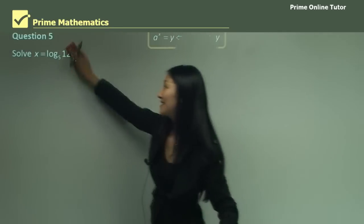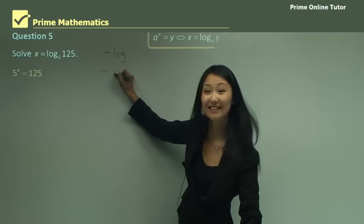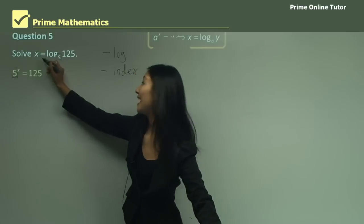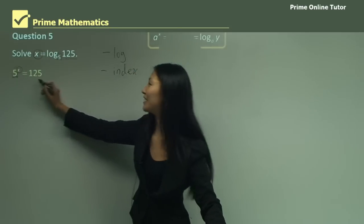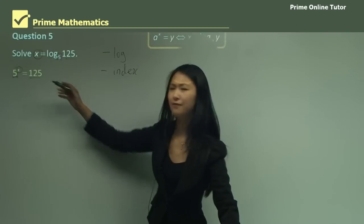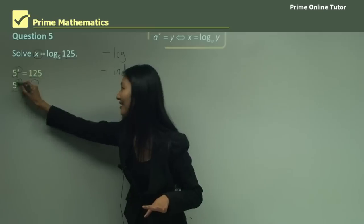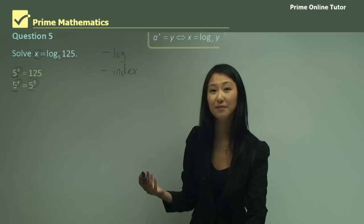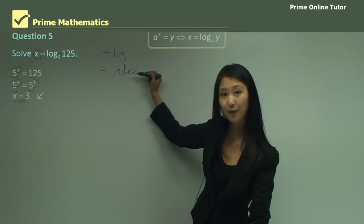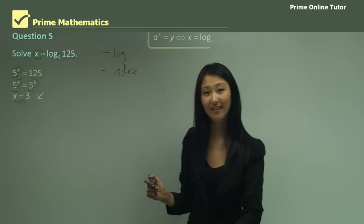Question 5: solve x equals log base 5, 125. First, change from log form to index form: the base is 5, the log equals x so x becomes the index, and 125 moves over, giving 5 to the power of x equals 125. We need the same base on both sides: 125 equals 5 to the power of 3. Since the bases are the same, the indices must match, so x equals 3. Steps: log to index form, make bases the same, then equate the indices.